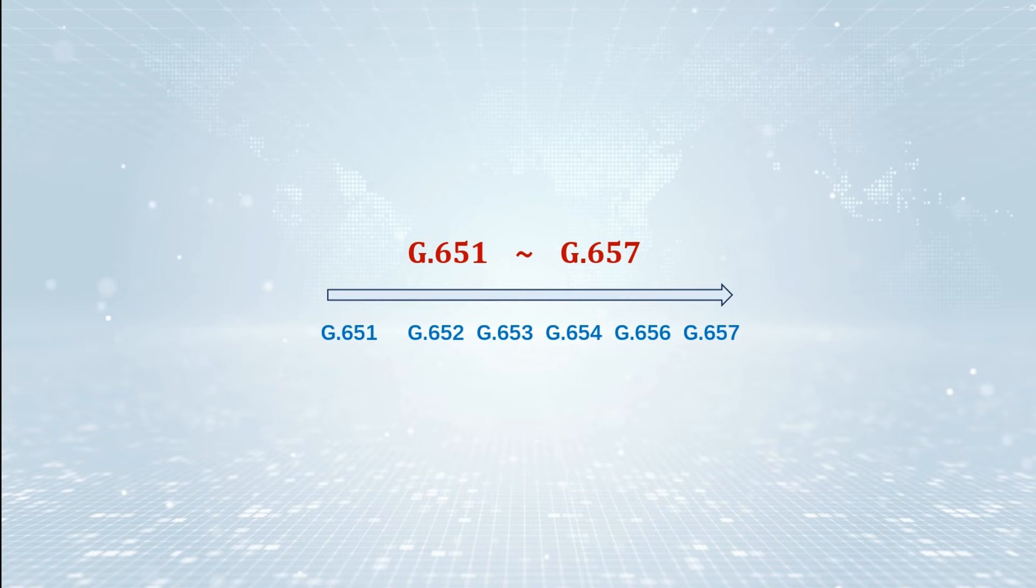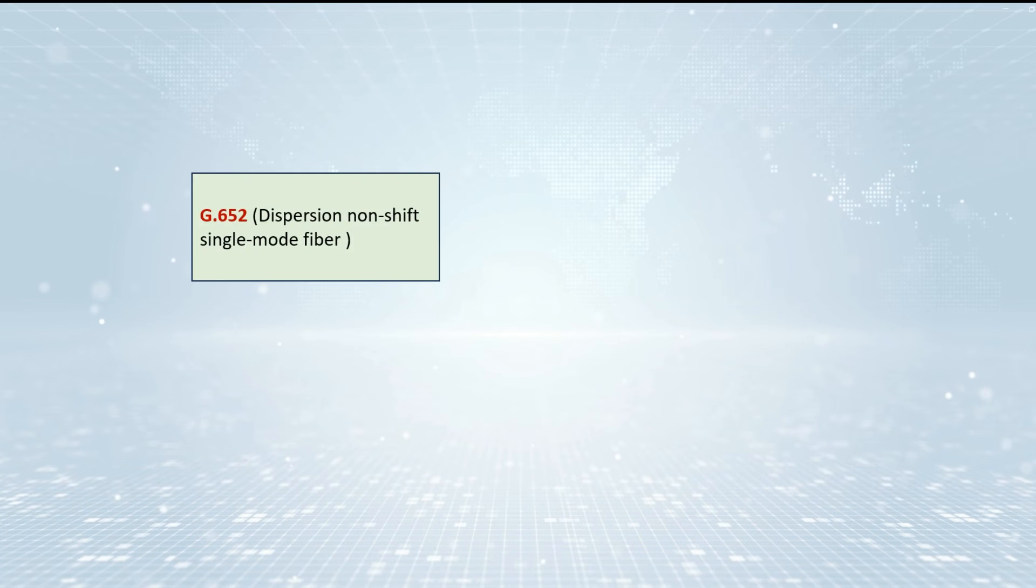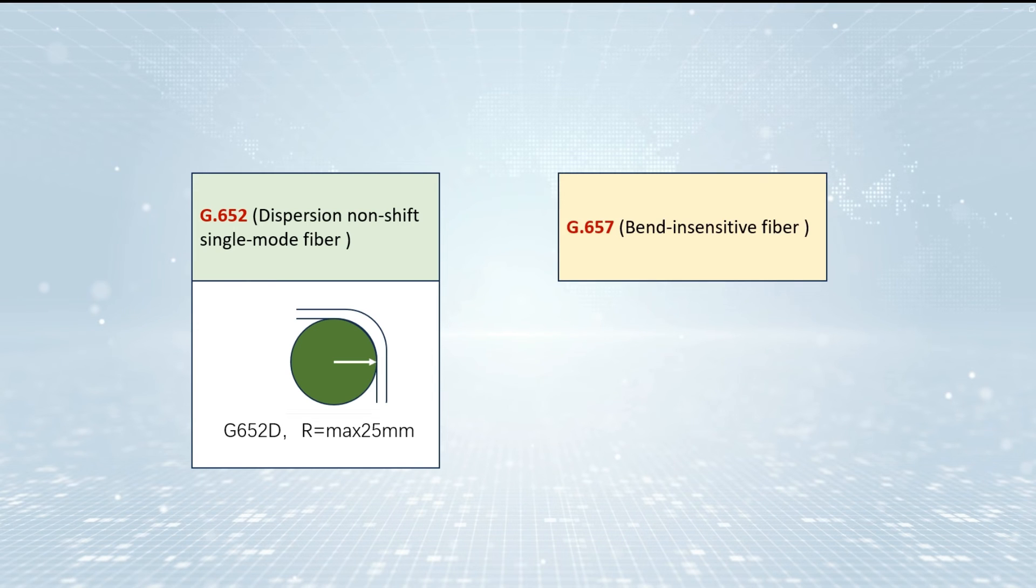G652 and G657 are the two most common types of fiber-optic cables. G652 fiber is the most commonly used fiber, of which G652-D is the newest subcategory. The maximum bending radius of G652-D is 25 millimeters.